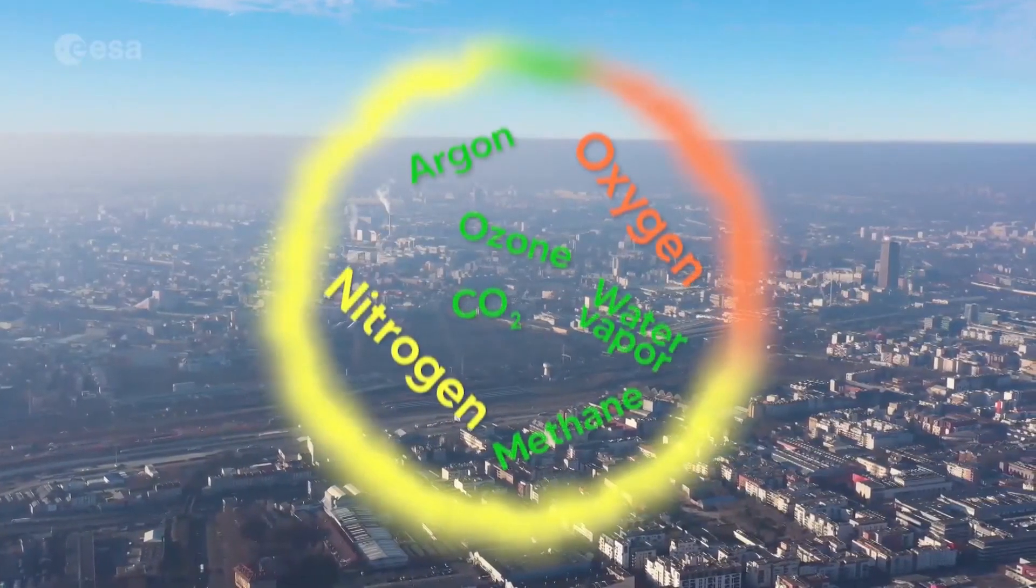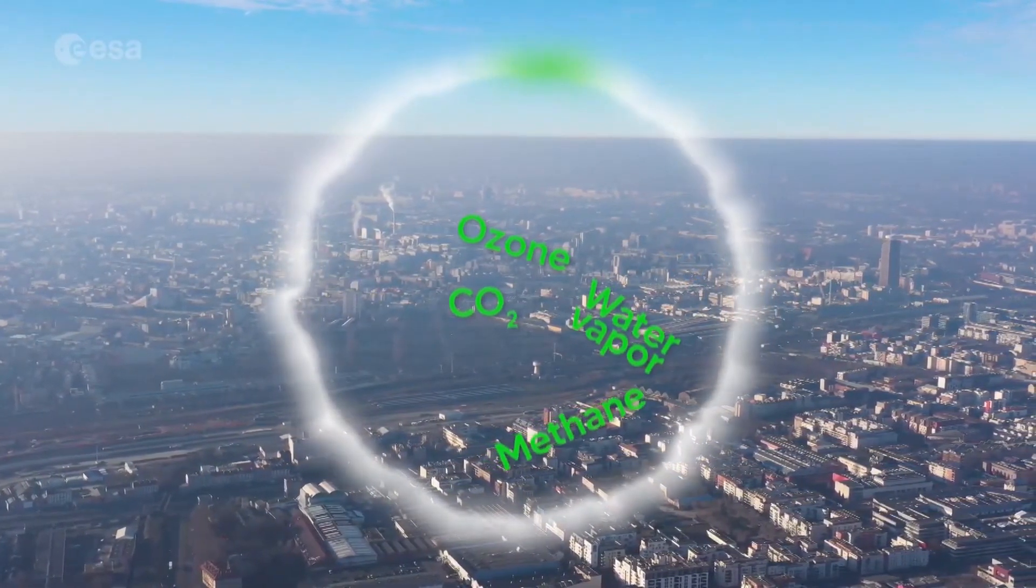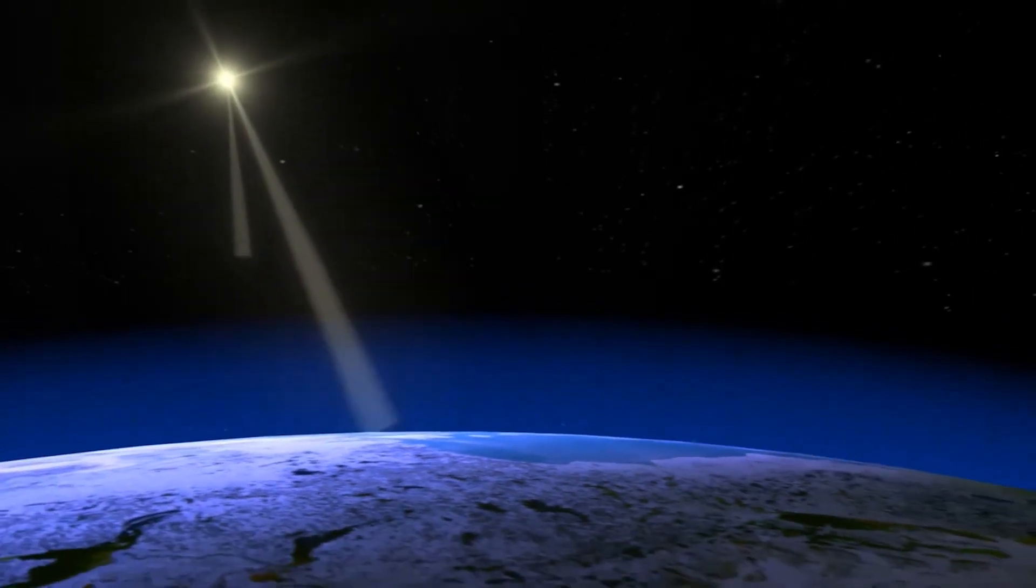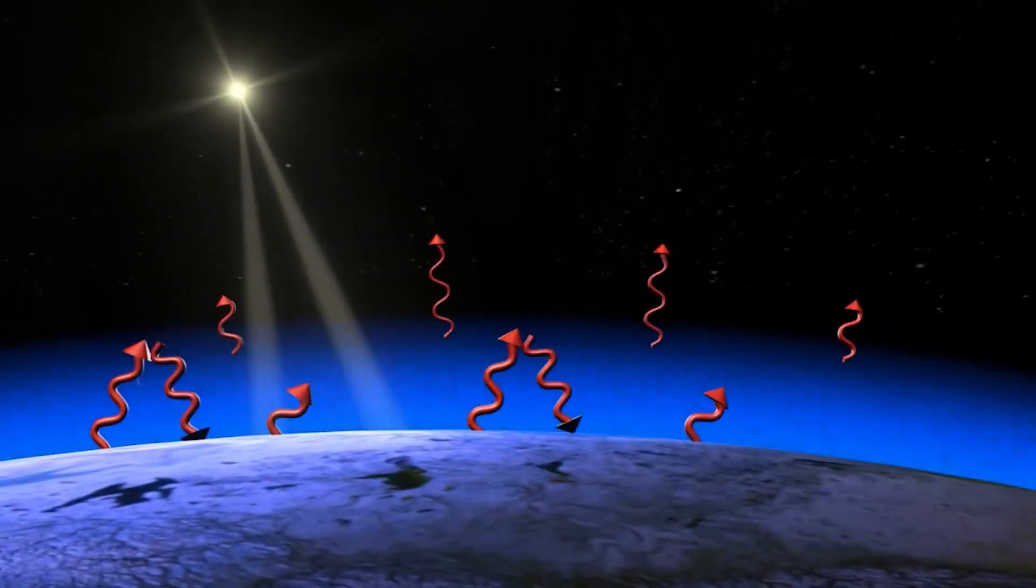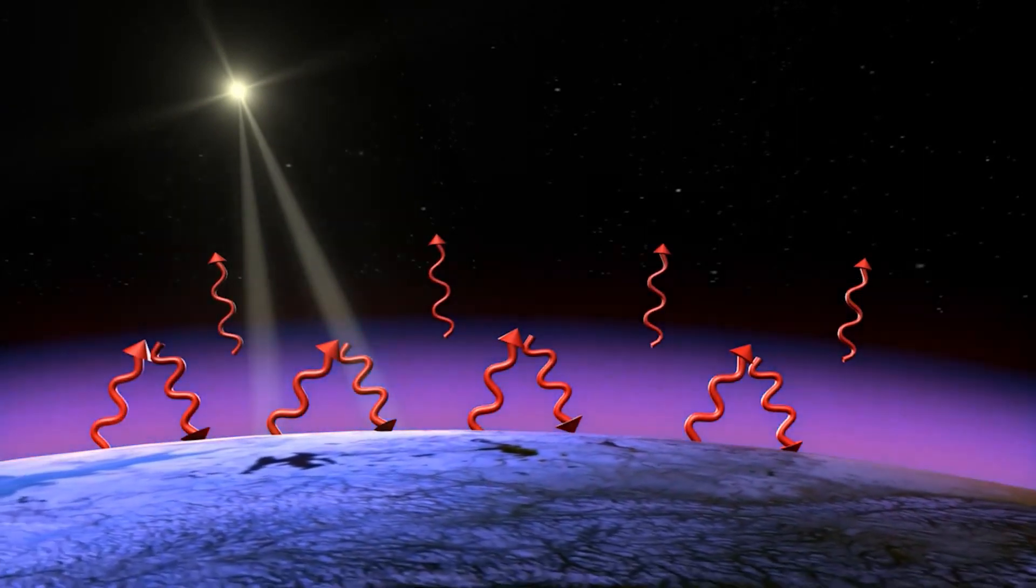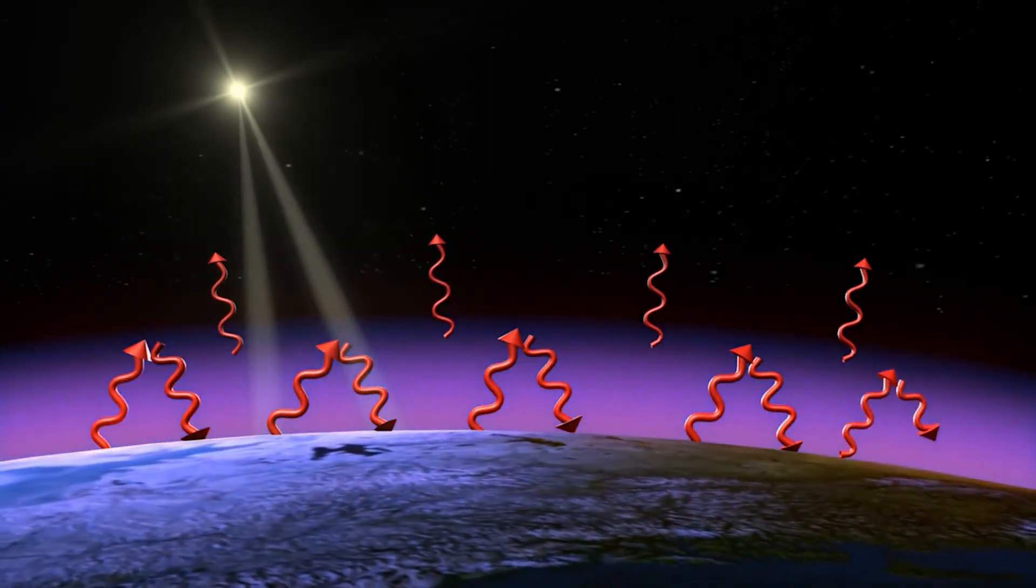These gases—carbon dioxide, methane, ozone and water vapour—are called greenhouse gases. Sunlight passes through them and warms the planet. The planet radiates some of that heat back out, and some of it gets trapped by these greenhouse gases, which warm the Earth like a blanket.